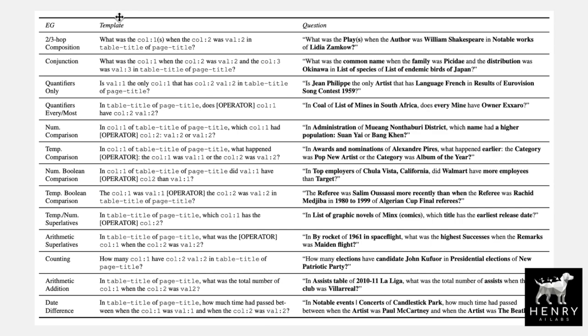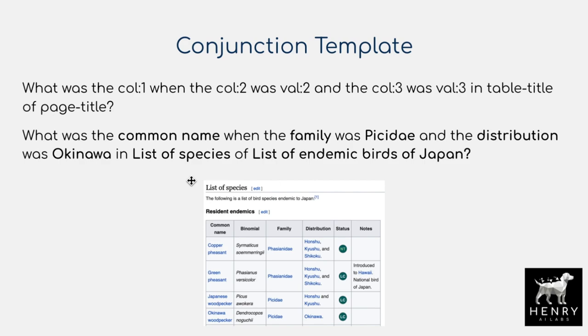They define 16 different symbolic reasoning skills, each with a template for constructing questions that test those skills, with answers automatically extracted from the templates. Here's the conjunction example using the Wikipedia table 'List of Endemic Birds of Japan': the template indexes column one (common name), column two (family), and column three (distribution) along a given row — for example, the copper pheasant — to automatically generate a question and answer. Combined with the table title and page title, this shows how tables generate questions automatically and at scale through these template designs.